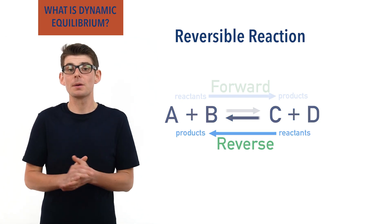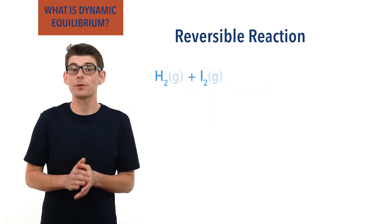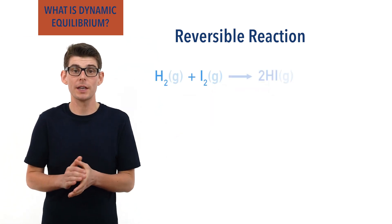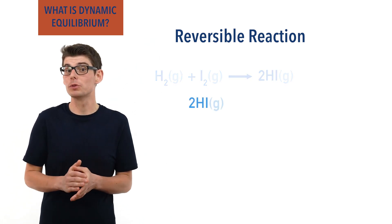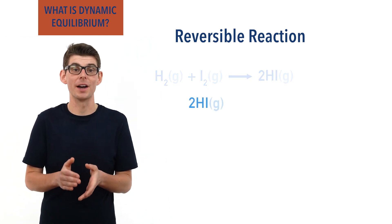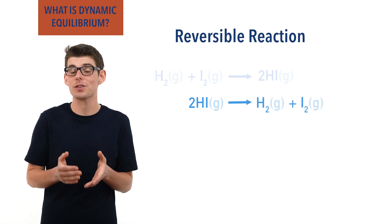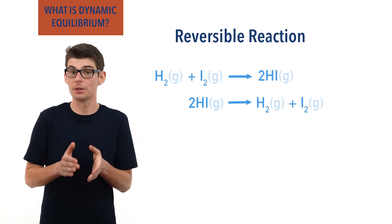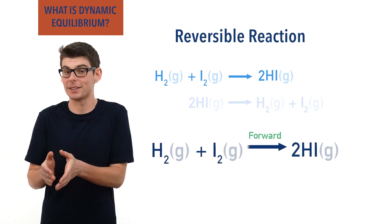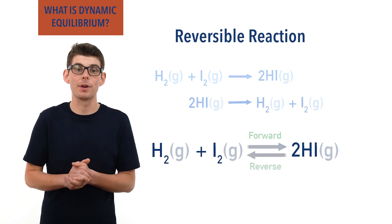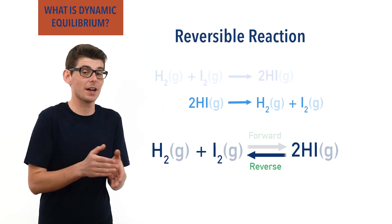For example, hydrogen and iodine gas can be reacted together to form hydrogen iodide. Hydrogen iodide, the product, is also able to react by itself and form hydrogen and iodine. This means the reaction is reversible — there is a forward reaction of hydrogen and iodine reacting together, and a backwards reaction of hydrogen iodide forming hydrogen and iodine.